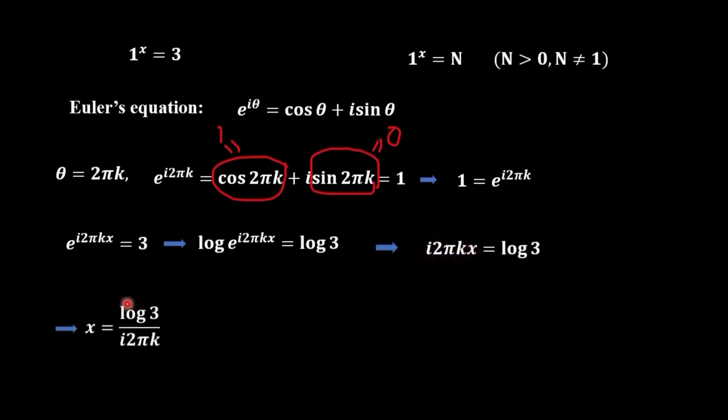We multiply here numerator and denominator with i. Then, we will have this equation. And this is the answer. Of course, here, k not equal to 0.